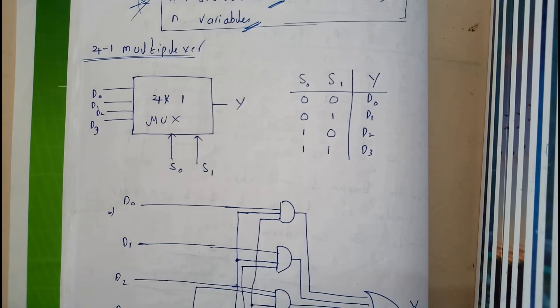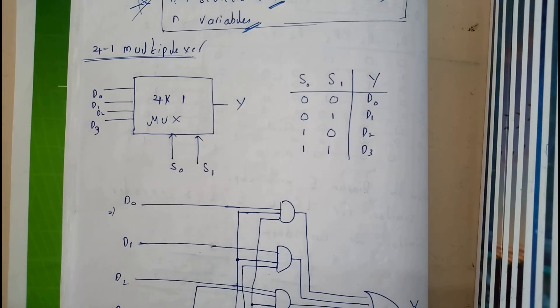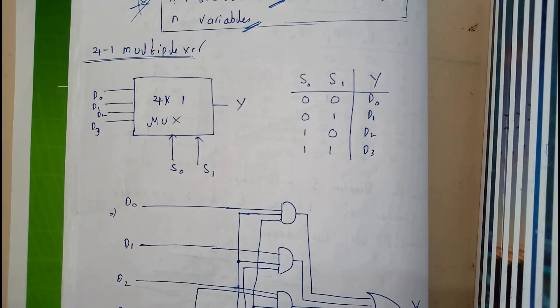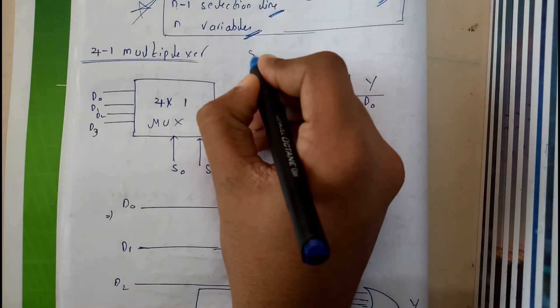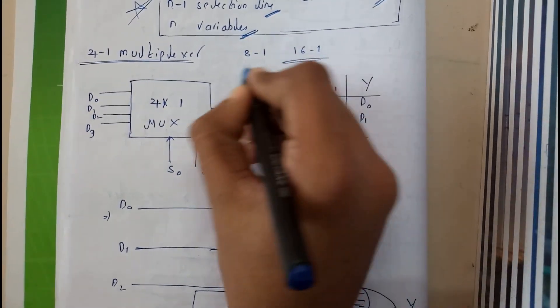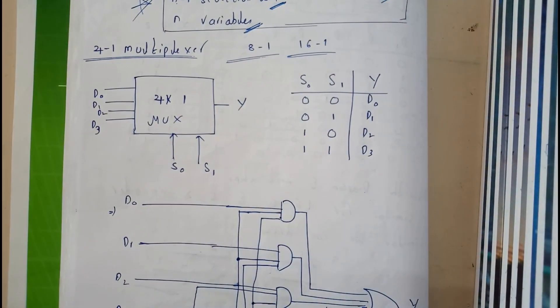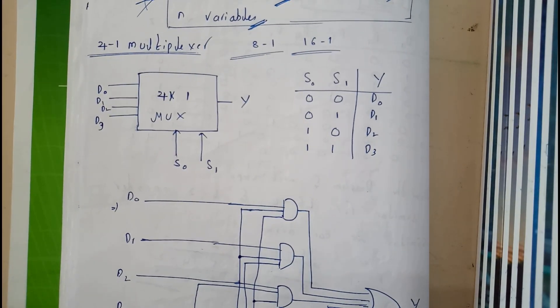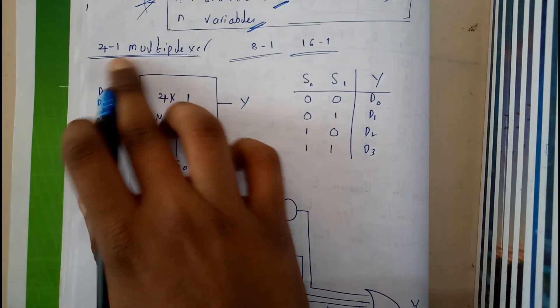Hello guys, in this tutorial let's go through the 4-to-1 multiplexer. Take a piece of paper and try it out yourself. You also need to try 8-to-1 and 16-to-1 multiplexers as these are included in our syllabus. If you have any doubts, you can comment down below and I'll be helping you. So basically, a 4-to-1 multiplexer will be having 4 variables.